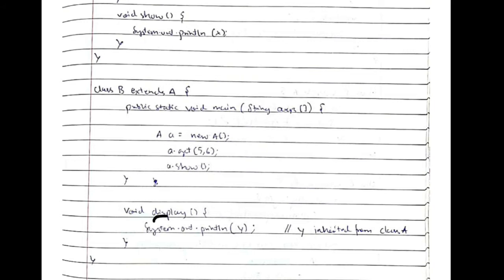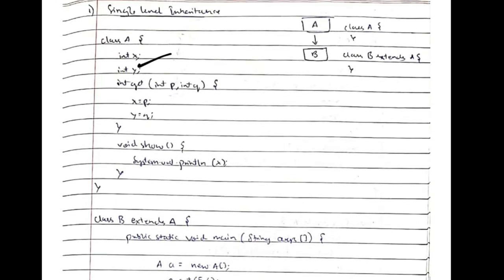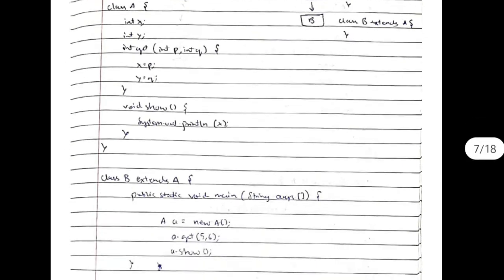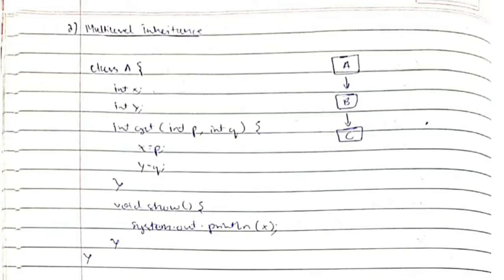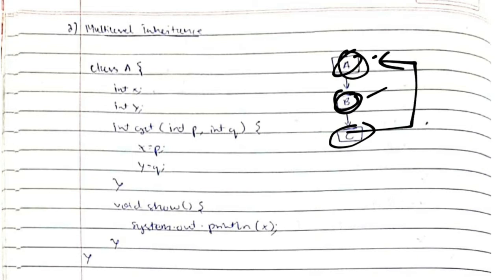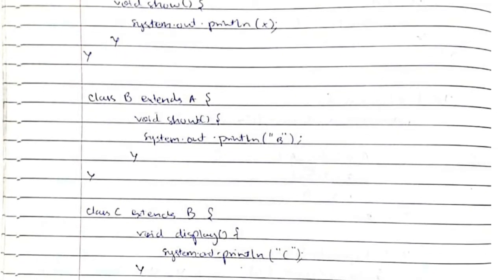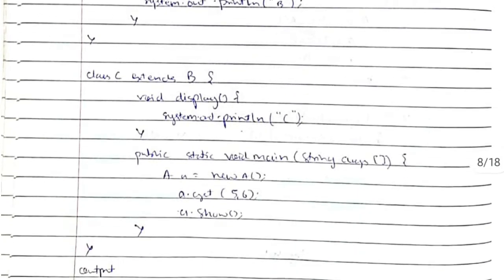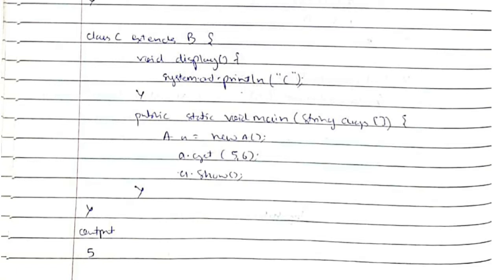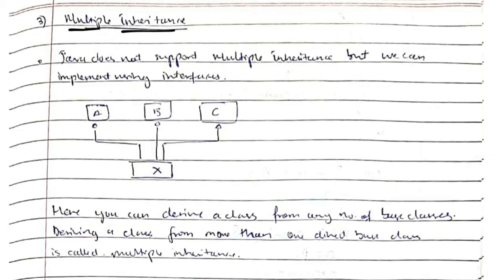For example, in class B the function 'display' is declared and it accesses variable y, which is a variable of class A — so it can be accessed from B. Coming to multi-level inheritance, there are multiple levels: if B extends A and C extends B, then C can access the data members of A. So we have class A, then class B extends A, then class C extends B, and in class C we access elements of A. This is known as multi-level inheritance.